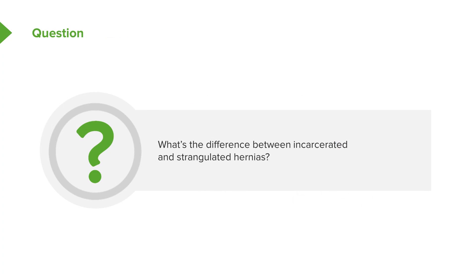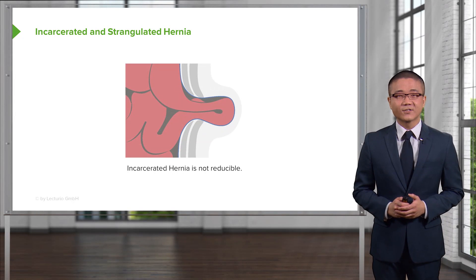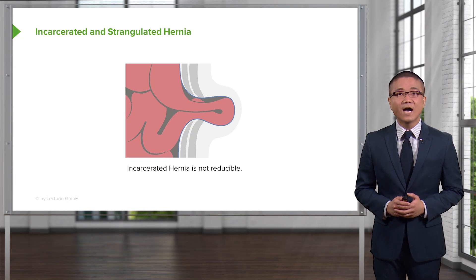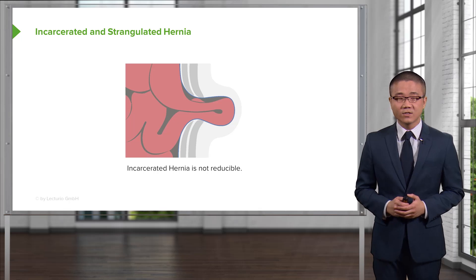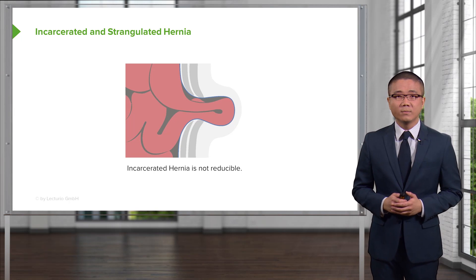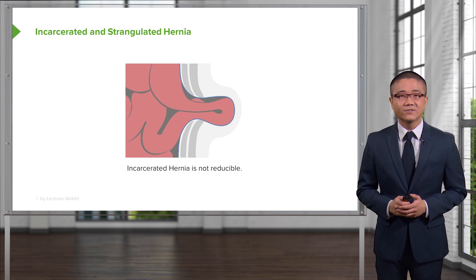What's the difference between an incarcerated and strangulated hernia? This is a depiction of an incarcerated hernia that is not reducible. An incarcerated hernia simply means it is not reducible. There are patients who have an acute incarceration as well as a chronic incarceration, and that difference is very important in determining whether or not the patient needs urgent surgery.